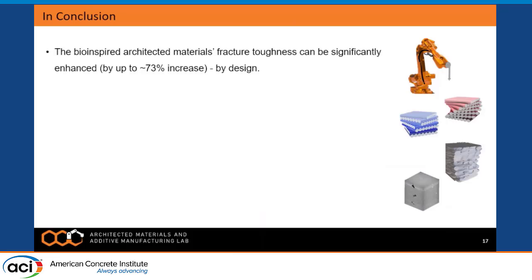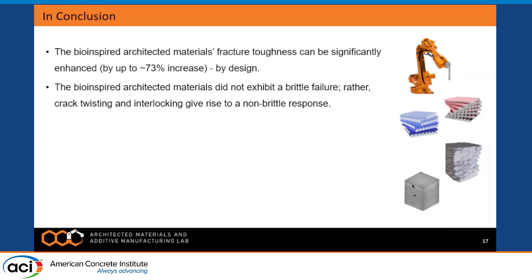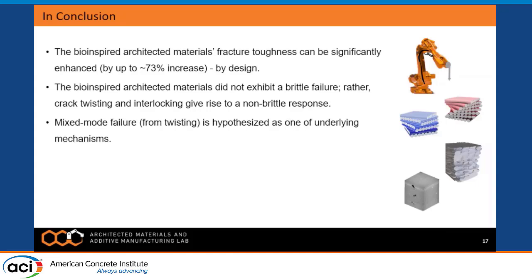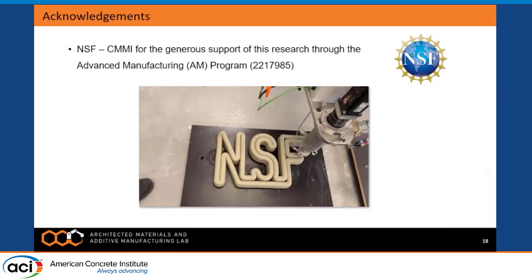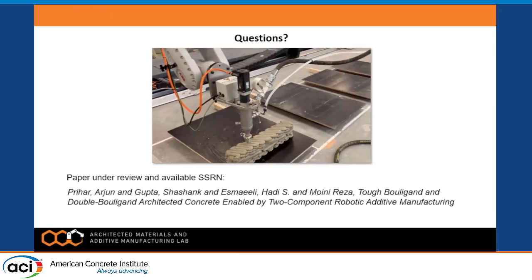In conclusion, our bio-inspired architectures increase fracture toughness beyond that of conventionally cast or lamellar printed samples without compromising strength in the modulus of rupture tests. The materials did not exhibit brittle failure — there was a softening effect — very different from conventional cast concrete. We hypothesize this is due to mixed-mode failure as the crack propagates. More broadly, this work begins a new step toward designing concrete whose architecture improves fracture toughness, enabling reliable tensile performance with measurable fracture toughness for both reinforced and unreinforced concrete. We acknowledge NSF support through the Advanced Manufacturing Program.